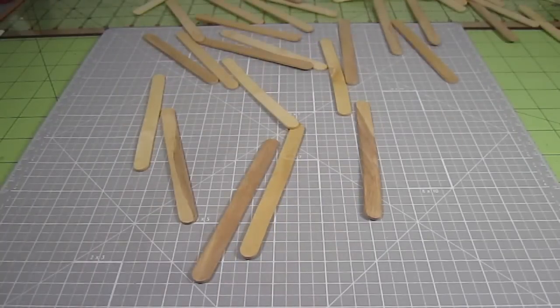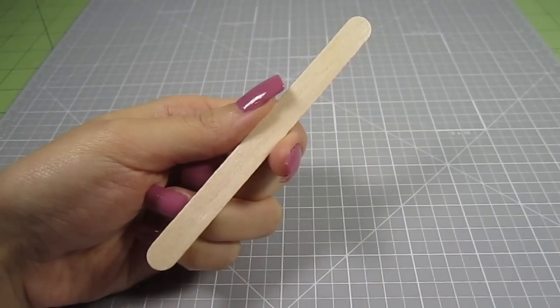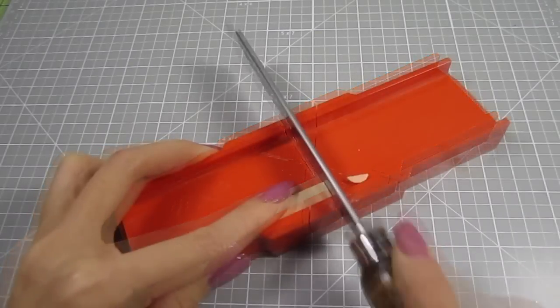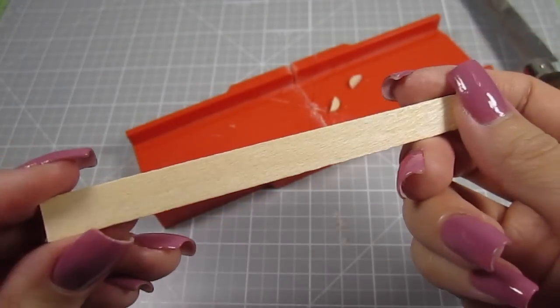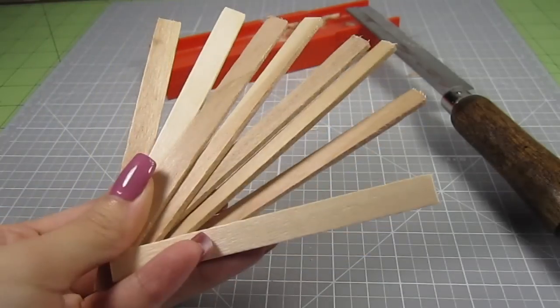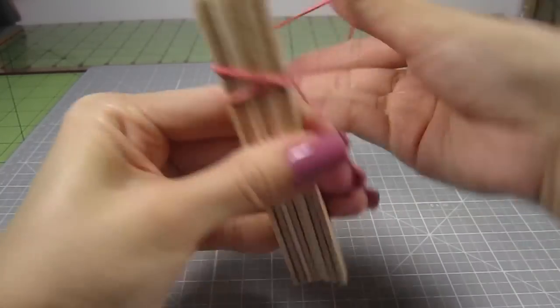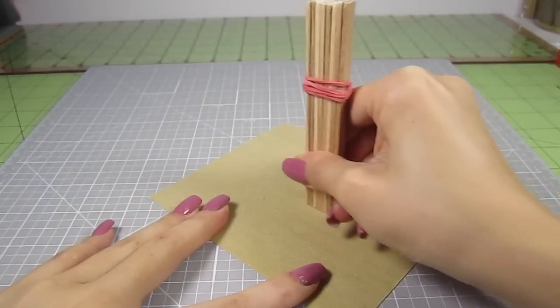Now grab a bunch of popsicle sticks. Take one and cut the round ends off. Cut enough off so the popsicle stick ends up being 4 inches long. I also do this with a miter saw. Make 8 of these. To make sure all 8 are exactly the same length, I rubber band them together and sand them down all at the same time.